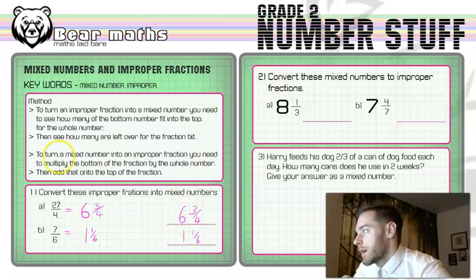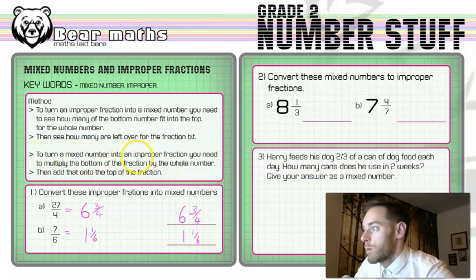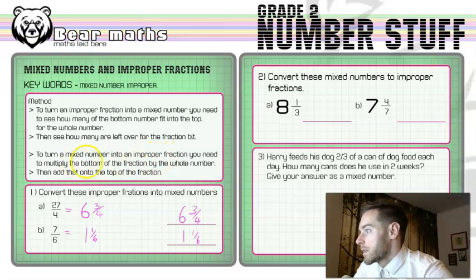Now in question two, we need the second method in the method box here. We're going to go the other way with it from mixed numbers to improper fractions. What we're going to do is multiply the bottom number of the fraction by the whole number, and then we're going to add that onto the top of the fraction.